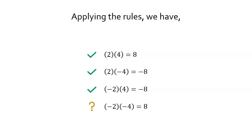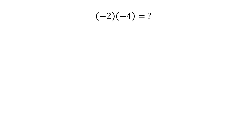Let's pretend that we do not know the product. Let us solve what we do not know from what we know. Let's think of a number where we can subtract 2 and 4, then get their product — let's say 10. Quantity 10 minus 2, times quantity 10 minus 4, equals 48. This equation is correct because 10 minus 2 is 8, and 10 minus 4 is 6, and 8 times 6 is equal to 48.